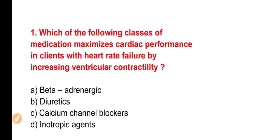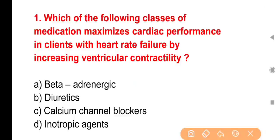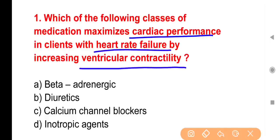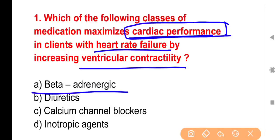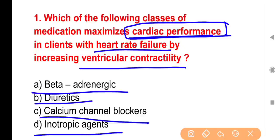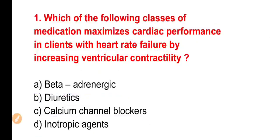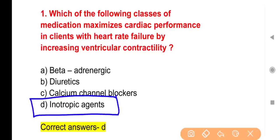First question: Which of the following classes of medication maximizes cardiac performance in heart failure by increasing ventricular contractility? Option A, Option B, Diuretics, Option C, Calcium Channel Blockers, Option D, Ionotropic Agents. The right answer is Option D — Ionotropic Agents.